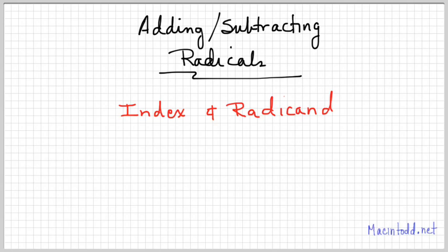If I want to add 3√2 plus 5√2, their index is the fact that they're both square roots. It's a little number outside the radical we don't show for square roots.